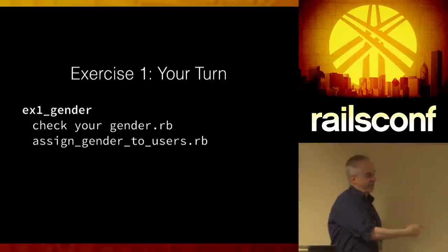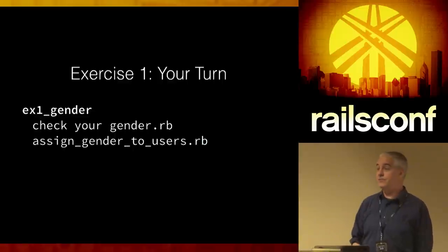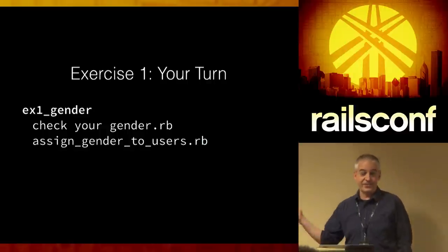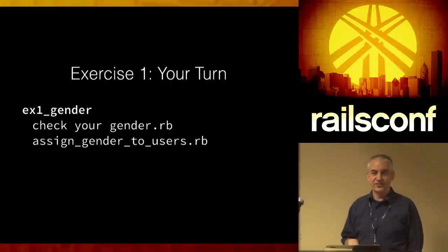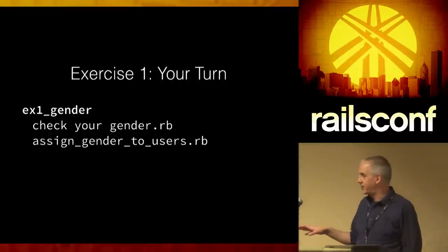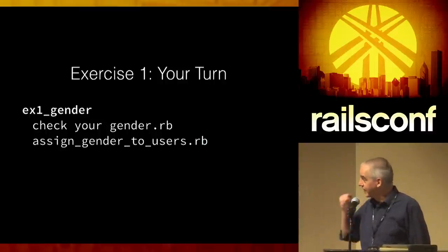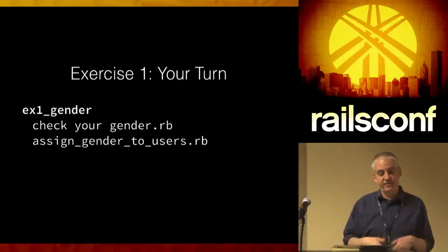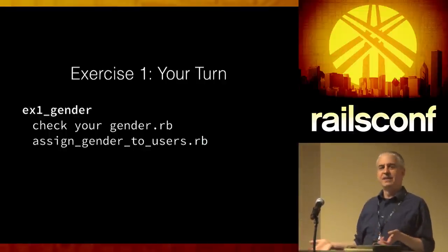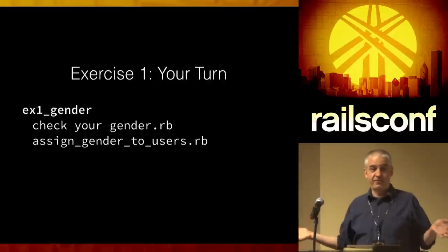Then there's 'assign gender to users.' There's a SQLite file, so it's not hard. I'd encourage you if you've got a slice of your users table on your local machine to hook it up. I pulled some of the people who work at Treehouse, dumped out the personal data but kept their names, and ran that into a SQLite database for easy distribution. The 'assign gender to users' file reads from the database, picks a gender, and writes it out. Let's try it for about five to ten minutes.